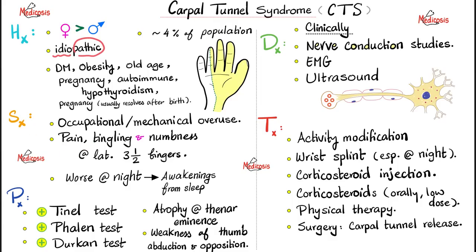Symptoms include pain, tingling, and numbness in the lateral three and a half fingers on the palmar aspect of the hand. These symptoms tend to be worse at night. Physical exam findings: positive Tinel test, positive Phalen test, and positive Durkan test — instead of tapping, you compress the median nerve. In severe, late cases expect atrophy of the thenar eminence, which is supplied by the median nerve, with weakness of thumb abduction and opposition.